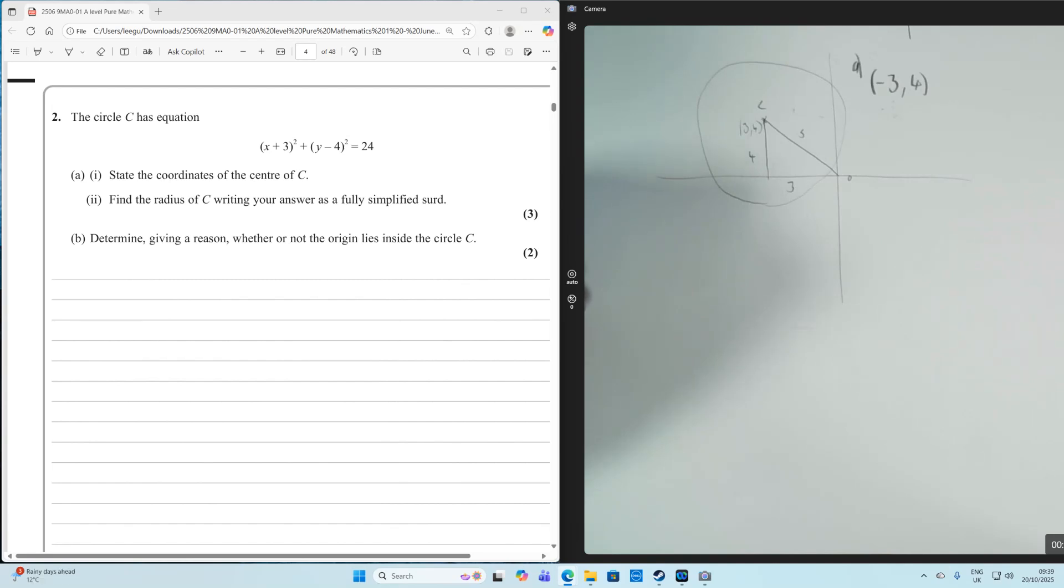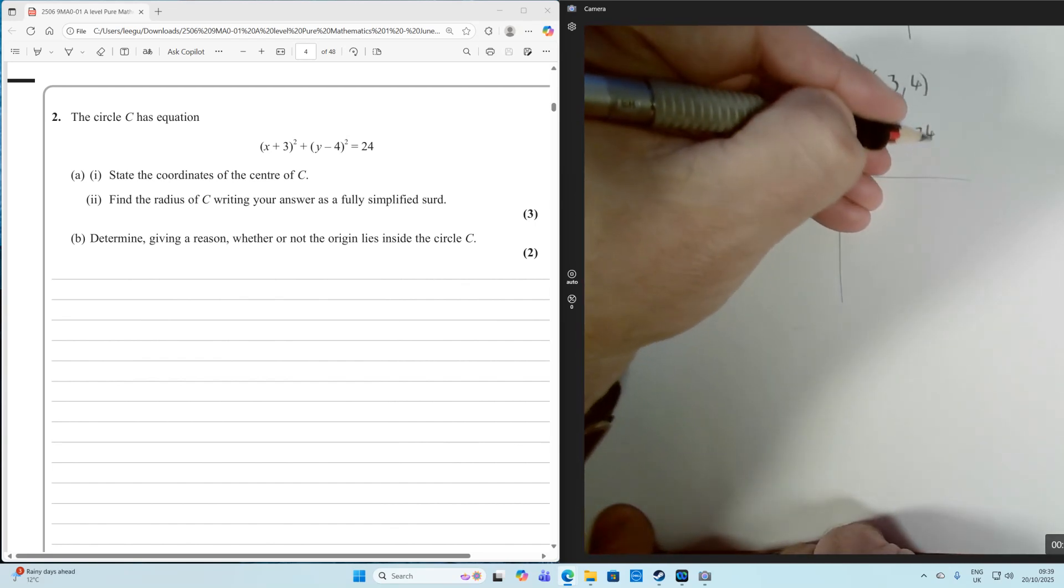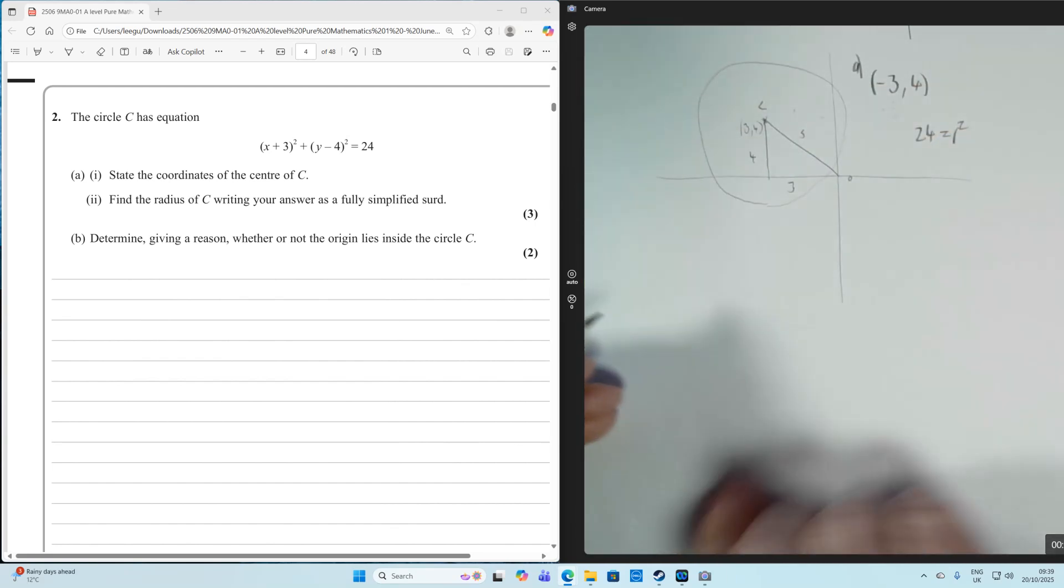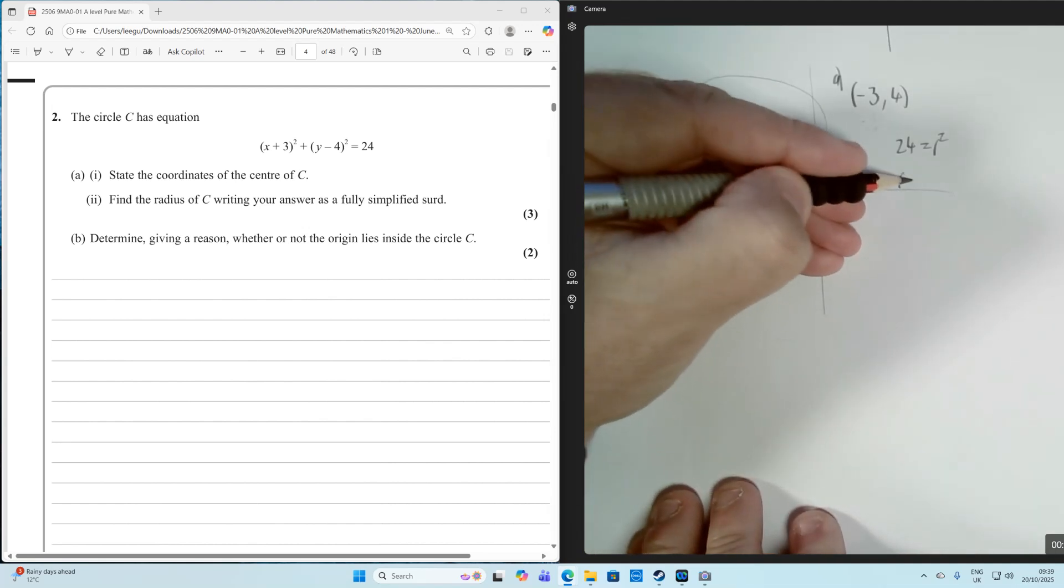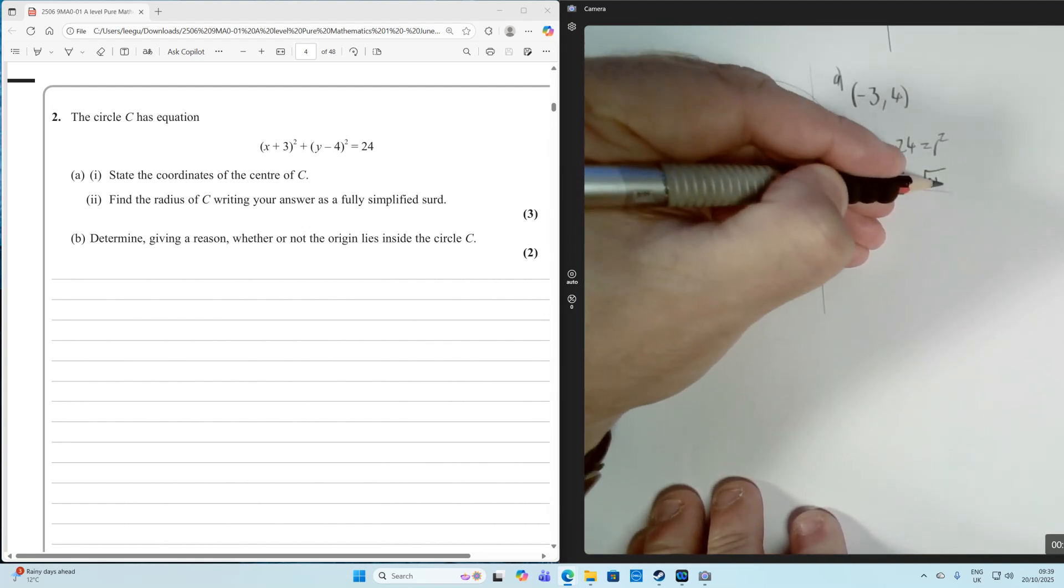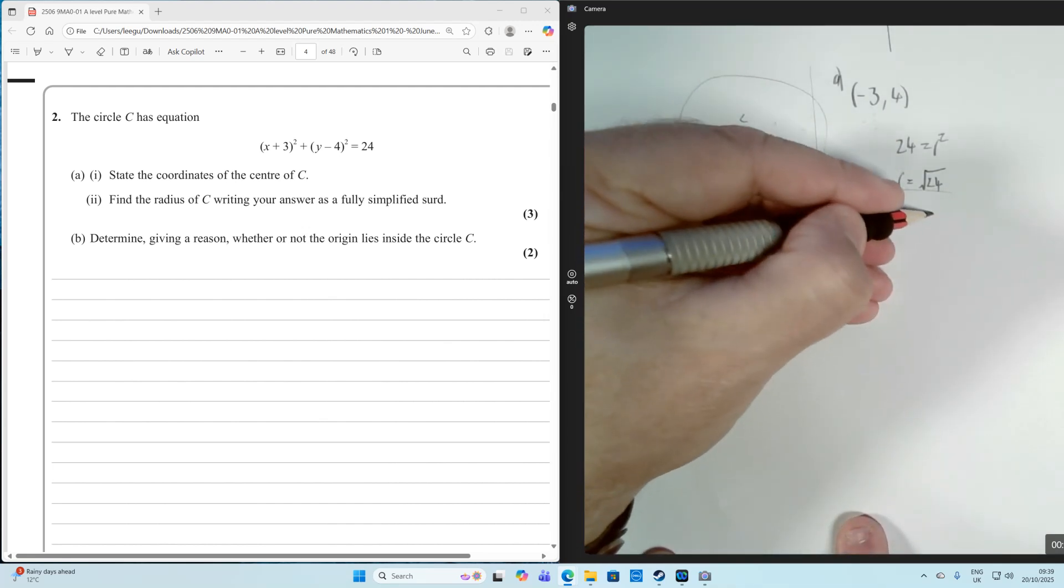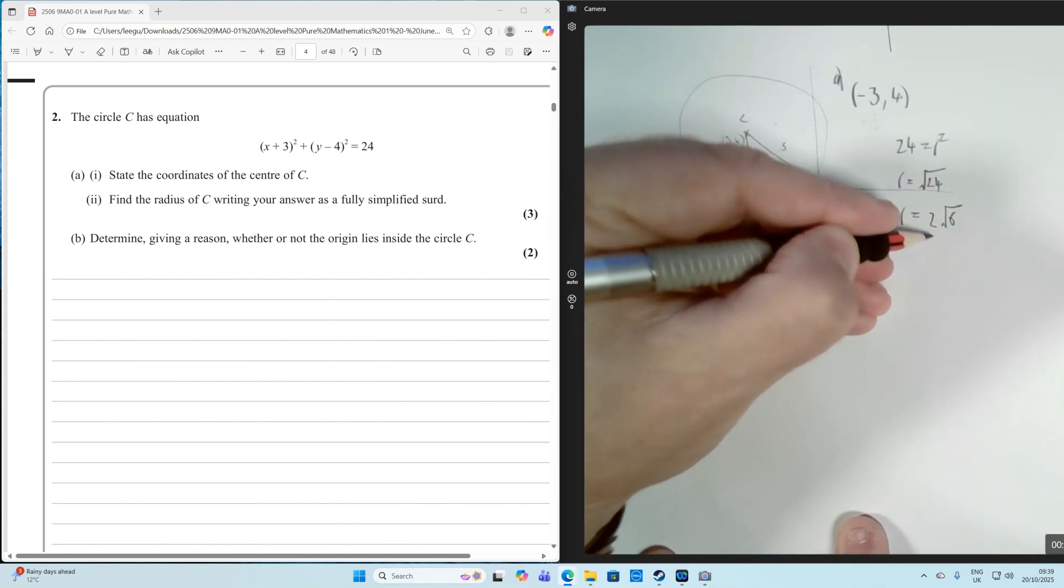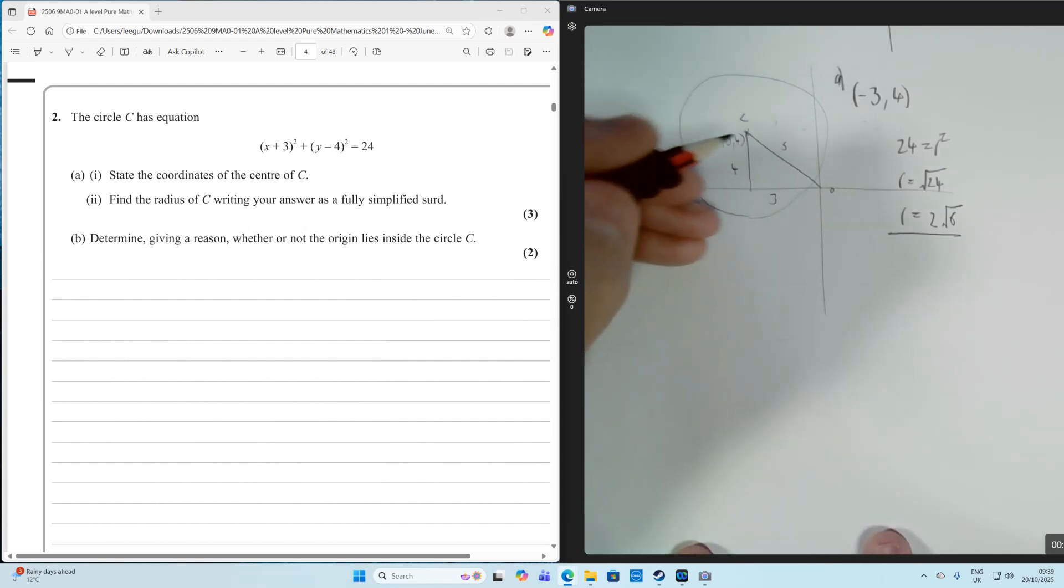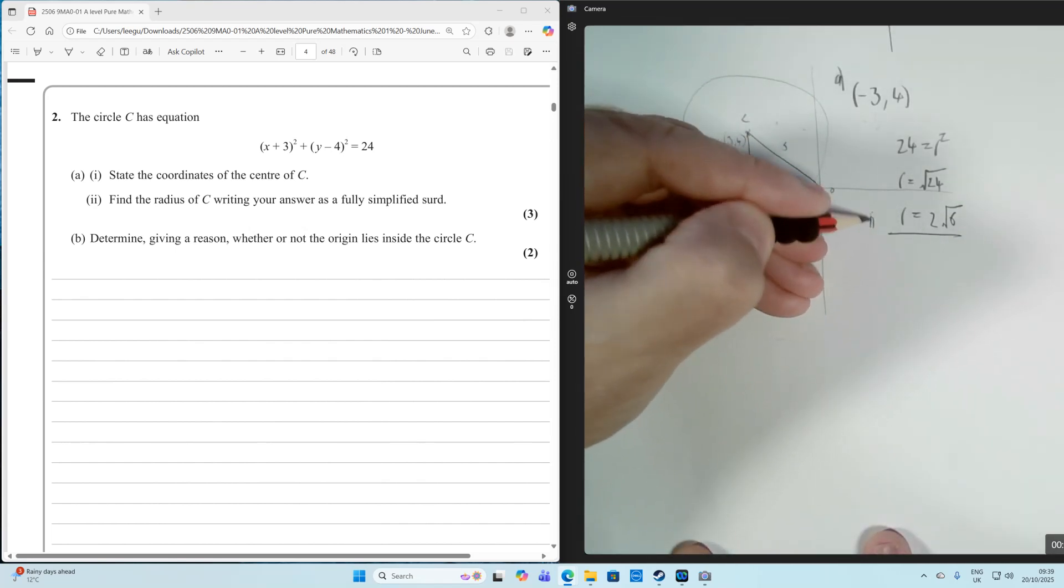Find the radius, writing your answer as a fully simplified surd. The 24 in the equation equals the radius squared. Therefore, the radius equals √24. When we put √24 into our calculator, it simplifies to 2√6.